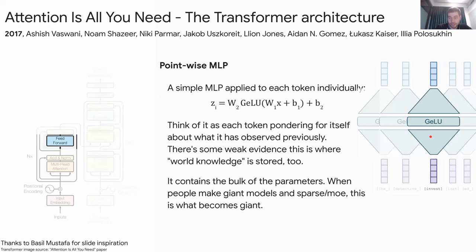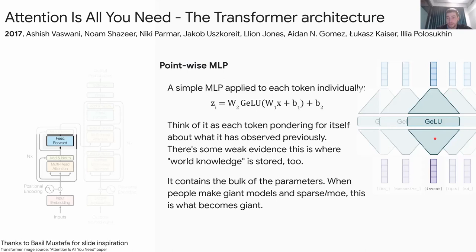One paper claimed that world knowledge learned during training — like the fact that Obama was president in 2008, or that Conan is a popular detective in an anime series — may be encoded in these MLP weights. The largest share of parameters in the whole transformer architecture is typically in these MLPs, and when scaling up transformers, people often focus on the MLP — including sparse transformers and mixture-of-experts approaches.